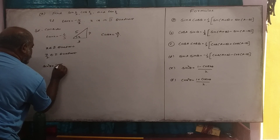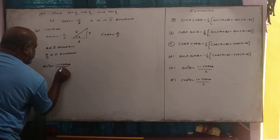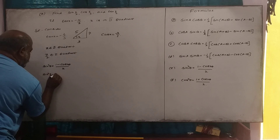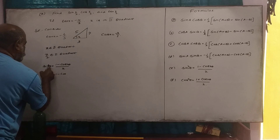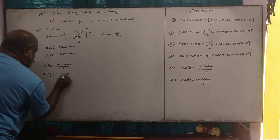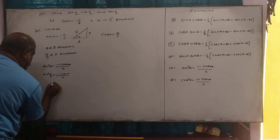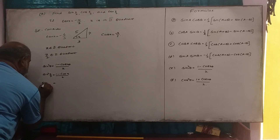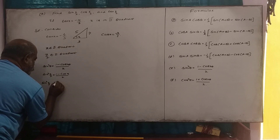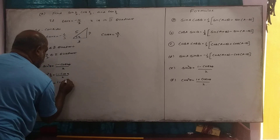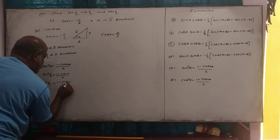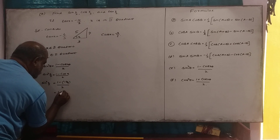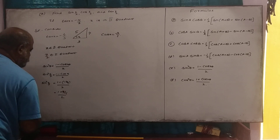Using the identity: 1 minus cos 2 theta divided by 2 into theta. So cos squared x by 2 is equal to 1 minus cos x divided by 2. Substituting: 1 minus cos x, where cos x is minus 3 by 5, divided by 2.